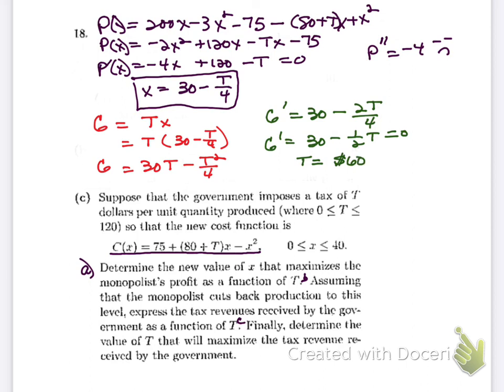Confirming: G double prime equals negative one half, which is negative, so t equals 60 indeed maximizes the government's tax revenue. The first part of this problem you could handle easily once you recognize what's given. The latter parts — expressing revenue as a function of t and then optimizing it — follow the same derivative process once the setup is understood.